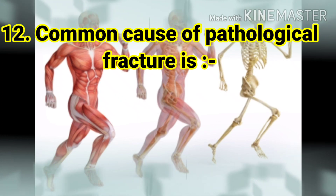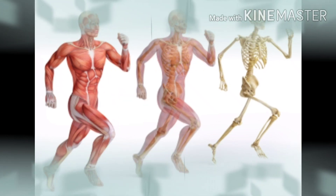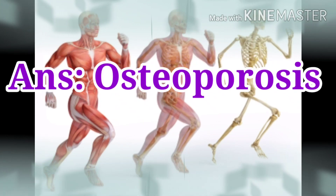The next question: common cause of pathological fracture is. The options are fall, infection, osteoporosis, and osteoarthritis. The answer is osteoporosis. Other causes include osteomalacia, Paget's disease, osteitis, benign tumors, and cysts.